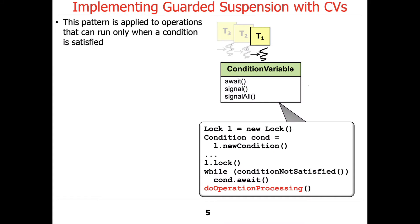This pattern is applied to operations that can only run when a particular condition is satisfied. For example, we might want to dequeue something from a bounded buffer, or enqueue something into a bounded buffer, and we want to make sure we've either got an item to dequeue or there's space in the queue. If neither of those conditions hold, we have to wait.